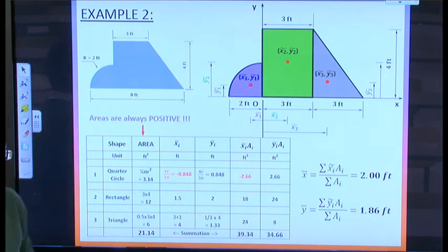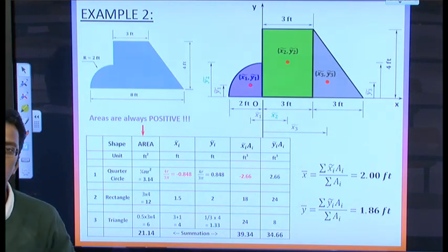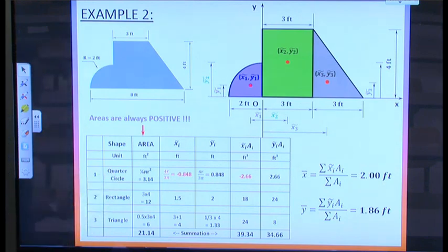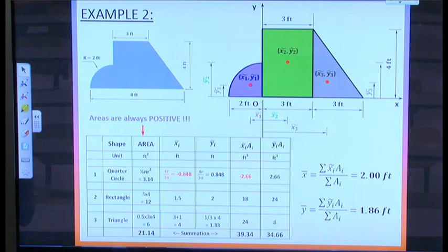This concludes the discussion on composite areas and how to find their centroids, ending segment one of this series. In the next video we will talk about moment of inertia, and after that the parallel axis theorem. Do watch the next two videos — thank you for watching, bye.